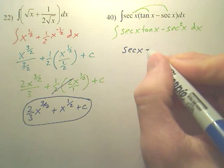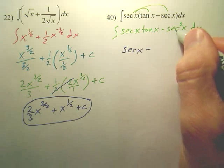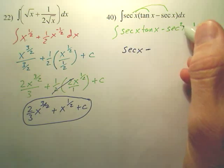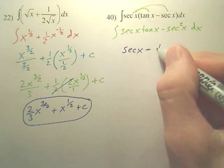There's a minus there. And what derived gives you secant squared is tangent. So the integral of secant squared is actually tangent x.